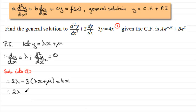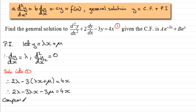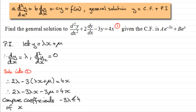If we expand the brackets we get: 2 lambda minus 3 lambda x minus 3 mu equals 4x. Now we compare coefficients. Comparing coefficients of x: minus 3 lambda equals 4, the coefficient of x on the right-hand side. Dividing both sides by minus 3 gives us lambda equals minus four-thirds.